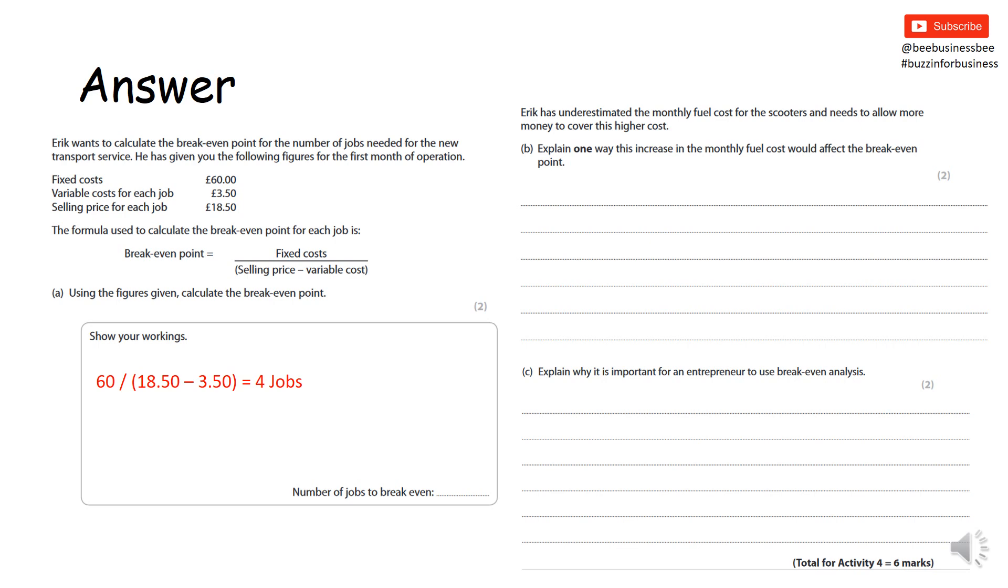The first thing you would have done is pulled your £60 in fixed cost. They try to catch you out possibly there, but it's £60 in decimal. £18.50 minus £3.50, which would be £15. £60 divided by £15 is four jobs. So there you go. Four is the answer. Perfectly fine. You're rolling now.